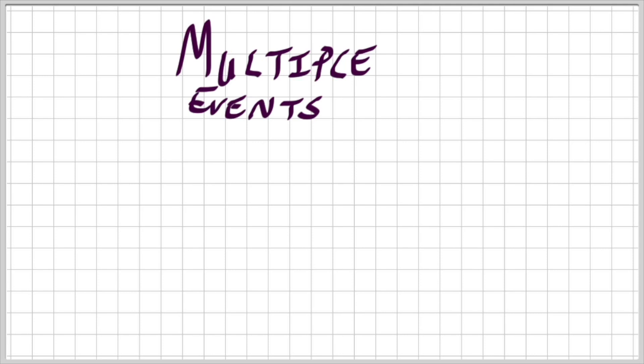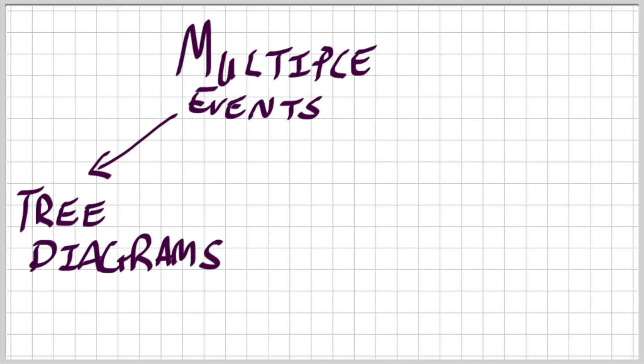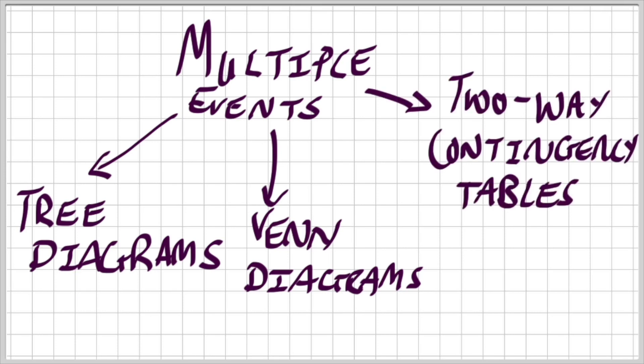So the first option is going to be a tree diagram. That is what this video is about. And the second tool that you are going to be able to use is a Venn diagram. The third one is a two-way contingency table.